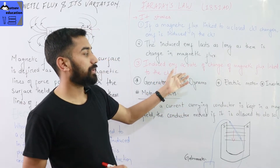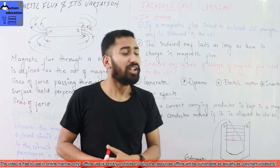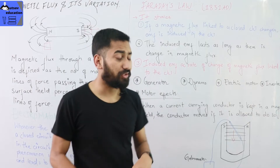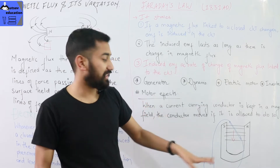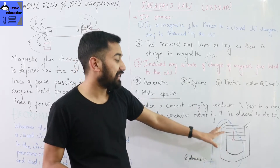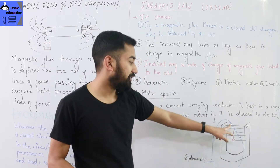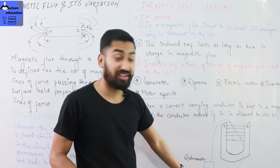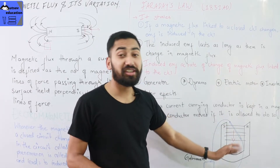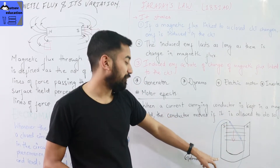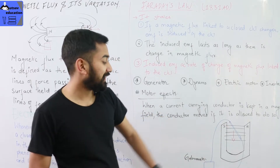If the rate of change of magnetic flux is very fast, the galvanometer will detect a higher current. The third point relates to the diagram. If the conductor is moved down, you will see a deflection in the galvanometer. The speed of movement determines the current — higher speed means more deflection in the galvanometer.